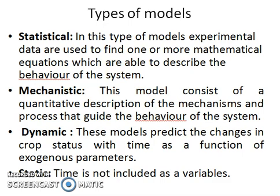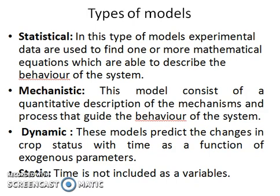The first one is statistical models. In this type of model, experimental data are used to find one or more mathematical equations which are able to describe the behavior of the system. Statistical models express the relationship between yield or yield components and weather parameters. Here, experimental data are converted and measured with the help of statistical techniques — for example, step-down regressions, correlations, etc.